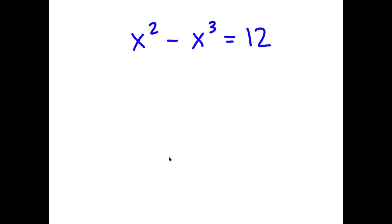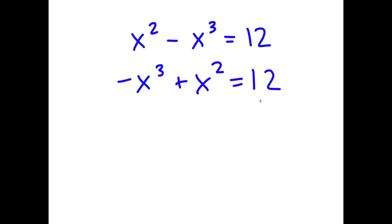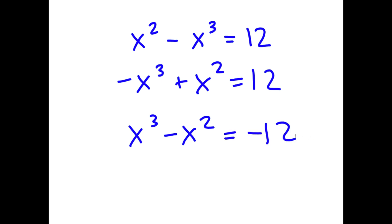In this problem, I have x squared minus x cubed is equal to 12. I'm going to first start by rewriting this as negative x cubed plus x squared is equal to 12. From here, I'm going to multiply both sides by negative 1, so now I get x cubed minus x squared is equal to negative 12.